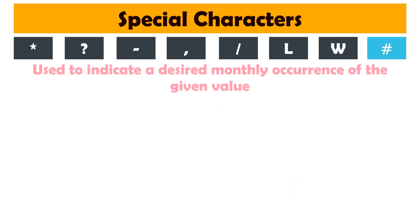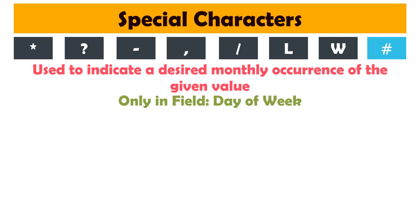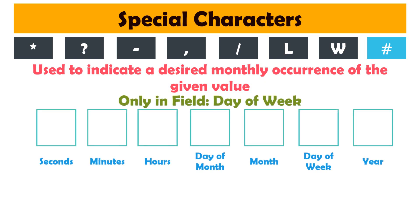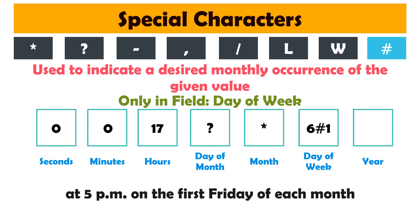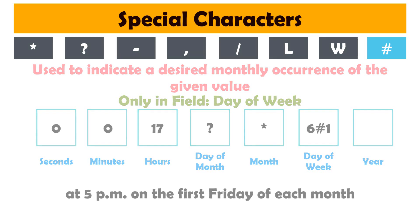Hashtag is used to indicate a desired monthly occurrence of the given value, for example the first Friday or fourth Thursday. It may only be used with the day of the week field. For example, '0 0 17 ? * 6#1' would trigger at 5 p.m. on the first Friday of every month.